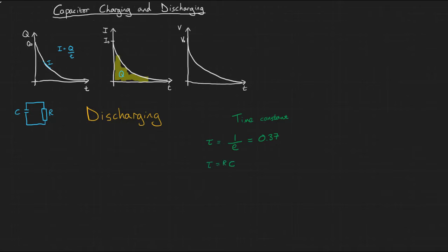You may have previously come across a similar concept called half-life. This is the time it takes for the charge, voltage or current to fall to 50% of their original value. This is related to the time constant by half-life equals log 2 multiplied by RC, which is equal to 0.69 RC.